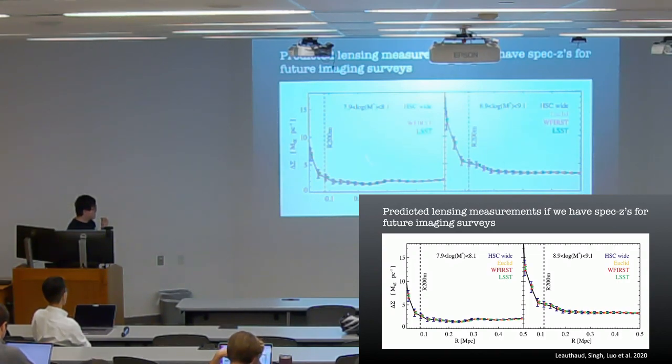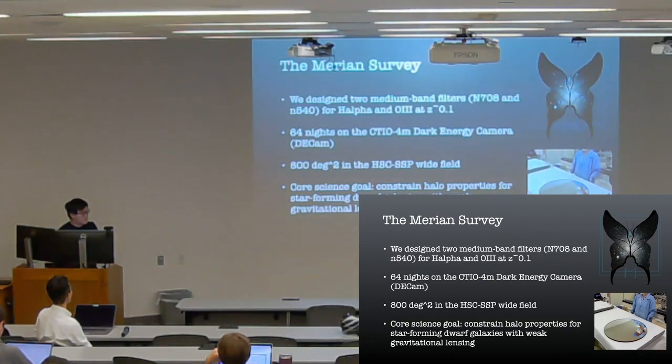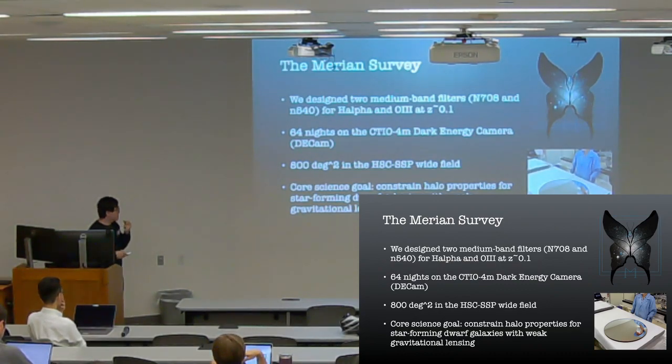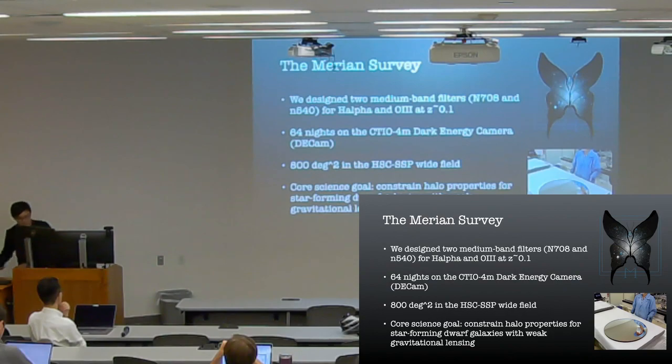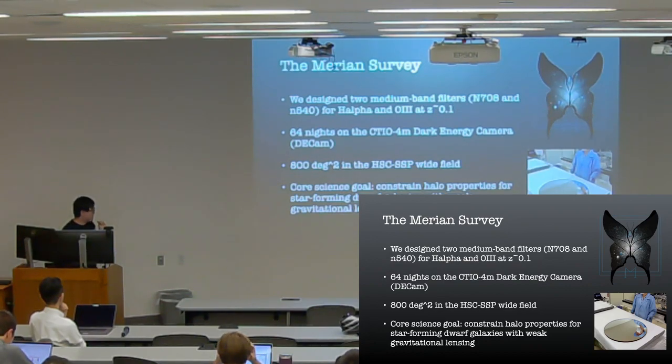But the thing is, this prediction is based on a huge assumption that we have spectroscopic redshifts for all the dwarf galaxies, which is basically impossible for those deep surveys like HSC or Roman. So, we need redshifts. That's where Merian comes from. The Merian survey - we built two medium-band filters at 540 for H-alpha and O3 at redshift 0.1. We got 64 nights on the dark-energy camera, the 4-meter CTIO telescope in Chile. And we are mapping about 800 square degrees in the HSC wide field.